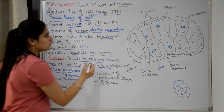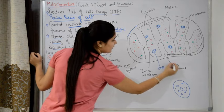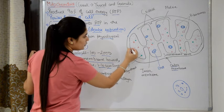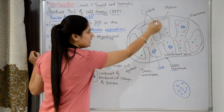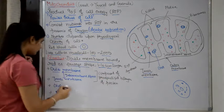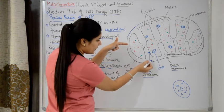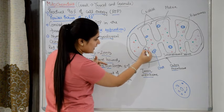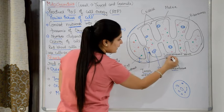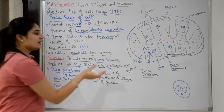So it is a double membrane — there is an outer membrane and an inner membrane. Between these two membranes there is a space. When we look at the outer membrane and inner membrane, there is a space between them called the inter-membrane space.